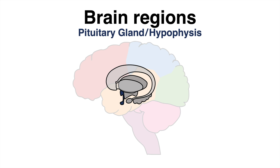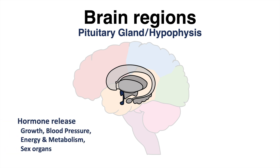The next structure is the pituitary gland, also known as the hypophysis. The pituitary gland, which is regulated by the hypothalamus, is predominantly essential for hormone release. Hormones released by the pituitary gland regulate growth, blood pressure, energy and metabolism, but also the sex organs.